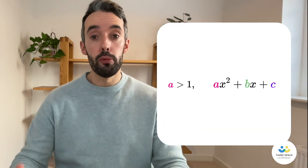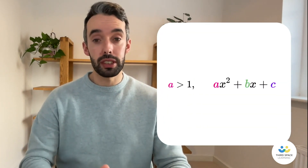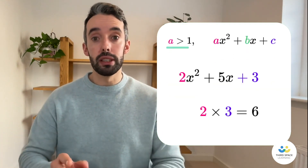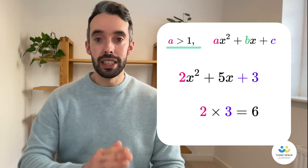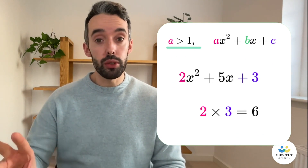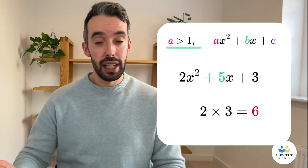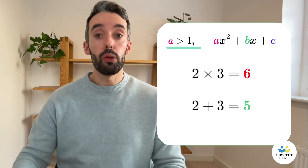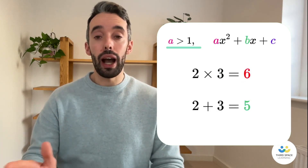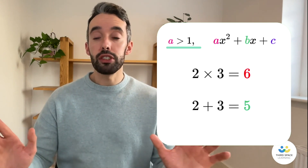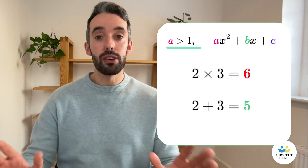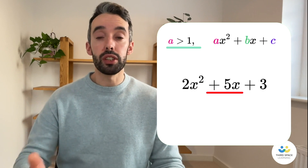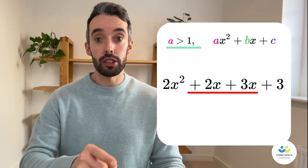So let's look at factorising quadratics in the form ax squared plus bx plus c, where a is greater than 1. To start with, we need to multiply the two outer numbers together — so 2 times 3 is 6. Next, we need to find two numbers that multiply to give positive 6 and add to give the middle number, which in this case is plus 5. Well, we know that 2 times 3 is 6 and 2 and 3 add to give 5. So what we have to do now is take the original quadratic and rewrite it, so that middle term plus 5x is going to be rewritten as plus 2x plus 3x.